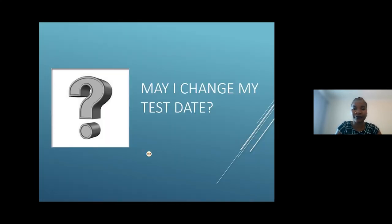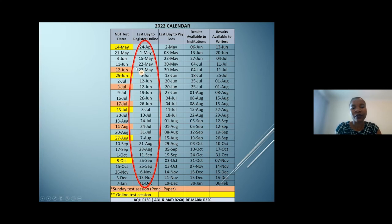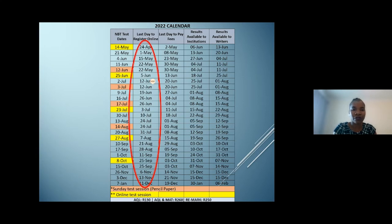You may change your test date, but ensure that you change the date or venue before the last day to register online. For example, for the 14th May online test session, registration closes on the 24th of April and opens on the 1st of April. If you've completed registration but want to change to a later date, you can do so before the 24th of April — after that, the system will not allow changes. Please note that if you miss a session, you will be required to pay the full amount again for the next session.